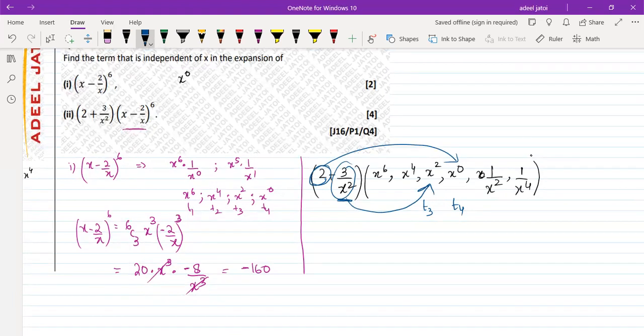So term 4 answer we already knew was minus 160 x to the power 0 and term 3 answer. For term 3 answer, we will be taking down power as square. So power as square will be 6C2, x to the power 4, whereas minus 2 upon x to the power 2 this will be.